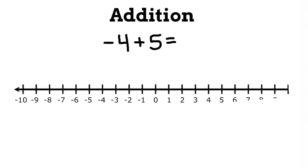Let's look at addition first. Take negative 4 plus 5, for example. Let's imagine a number line. Our first number is negative 4, so we want to start at negative 4 on the number line.